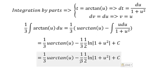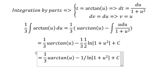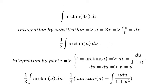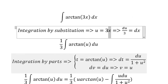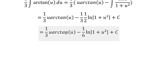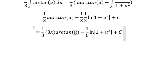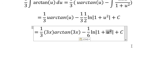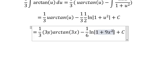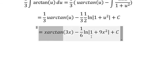1 over 3 multiply with 1 over 2, and we need to convert back to 3x. Simplify, and here is the final answer. That's it, the end. Thank you for watching.